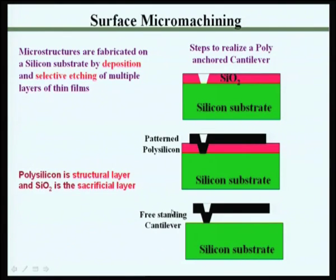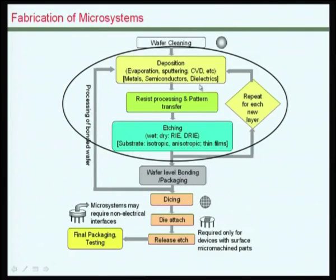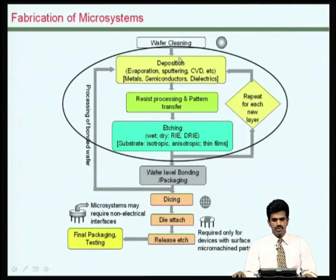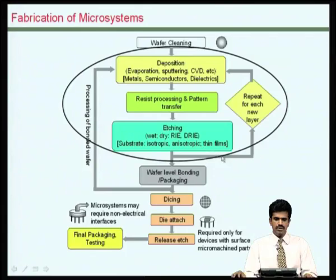Silicon dioxide in this instance is working as a dummy material during the deposition of polysilicon, and later after the structure is defined and hardened, it is going to be removed. Hence silicon dioxide in this instance is called the sacrificial layer. The process steps required for fabrication of such microstructures are very much structured and ordered, involving steps such as deposition of thin films, pattern transfer, and then etching of these thin films.